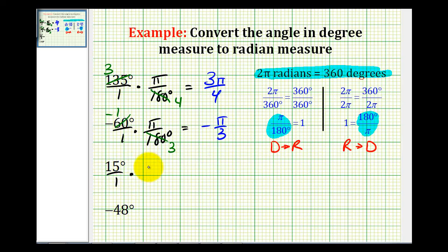Put the 15 over one, multiply by pi over 180 degrees. Here we have a common factor of 15. So this simplifies to one. And there are twelve 15s in 180. So we have one pi divided by 12, or just pi divided by 12 radians.